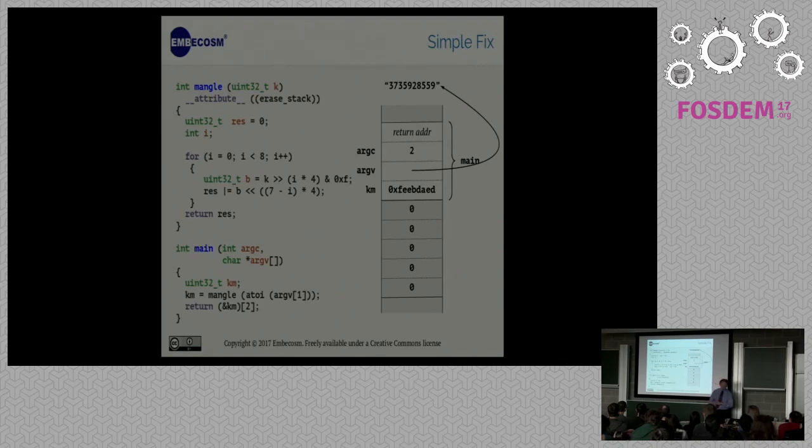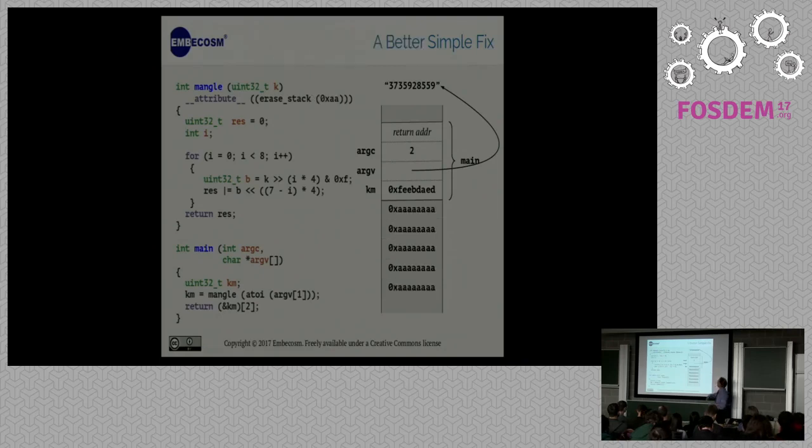Now the simple thing we can do is something like this. Let's have a new attribute called erase stack. Erase stack adds to the epilogue of any function a small piece of code which just writes zero over the entire stack frame. So now when I return, I can help myself to the next area. It's just gone being zeroed. And of course you can then generalize that. It doesn't have to be zero. Let's give it an attribute with an argument and we can turn it all into alternating bits.